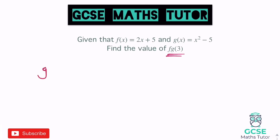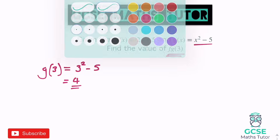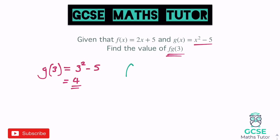So sub 3 into g — we get g(3) equals 3 squared, take away 5. So 3 squared is 9, take away 5, gives us the answer 4. So 4 is what I can now put into f. Subbing that into f, we get 2 lots of 4, which is 8, plus 5. And 8 plus 5 equals 13.